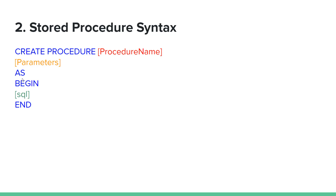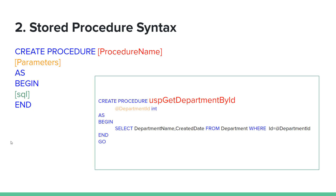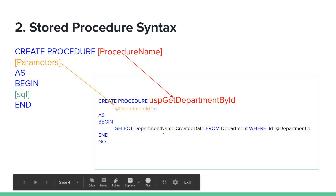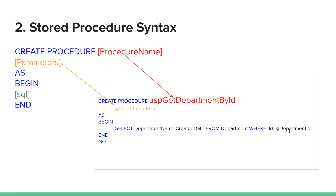I declare a variable, begin, as SQL. The department is in development. Create procedure as USP get department by ID - a parameter with department ID int, and a select department name, created date from department where ID equals to department ID.